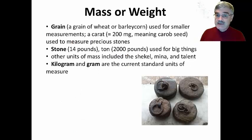We also had to have ways of measuring mass or weight. And in ancient times, mass or weight measurements were made by comparison to a number of grains of wheat or barley corn or the carob seed. Another ancient measurement of weight was a stone, which is about the size of a bowling ball or 14 pounds. Currently, we use the kilogram and gram as our units of measurement of mass or weight.